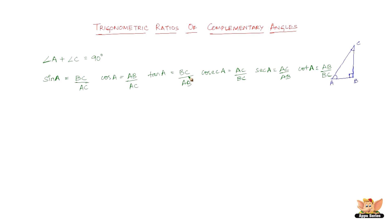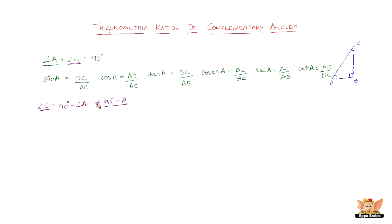Those are the six trigonometric functions and we've found the ratios of all of them for angle A. Now let us find the ratios of the trigonometric functions of angle C. We'll write angle C as 90 degrees minus A, just for convenience.